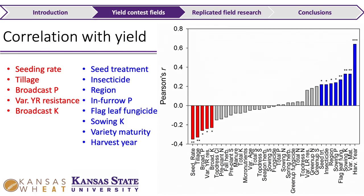Looking at what's actually related to yield in this data: in red are things negatively related to yield, and in blue are positively related. Positives included in-furrow phosphorus, seed treatment presence, insecticide, variety maturity, and harvest year. Negatives included seeding rate and tillage — meaning no-till fields were actually yielding slightly more than conventional-till fields. Let's go into more detail comparing how these management practices are affecting yield.